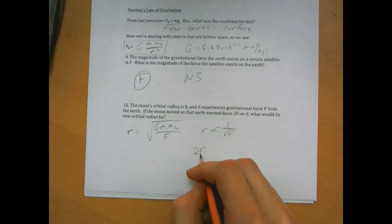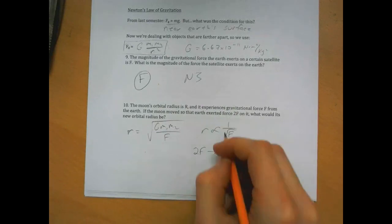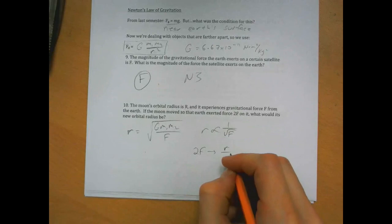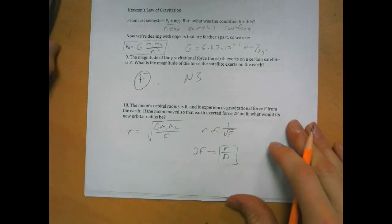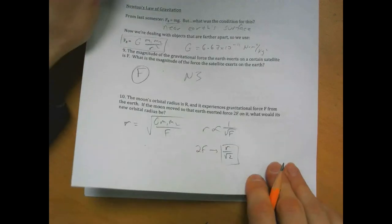So then if we change it to 2F, then we get a factor of 2 under the root in the denominator, so the r becomes r over root 2, so the moon would move that much closer to Earth.